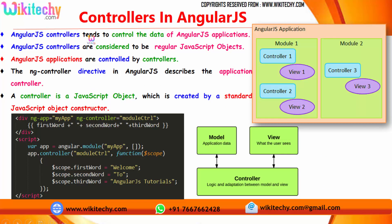AngularJS controllers control the data of AngularJS applications. AngularJS controllers are considered to be regular JavaScript objects, and the application data is controlled by the controllers. So AngularJS applications are controlled by controllers. A controller is a JavaScript object which is created by a standard JavaScript object constructor.